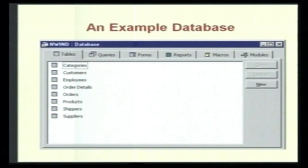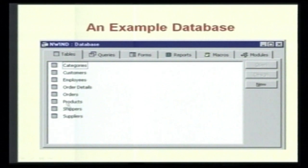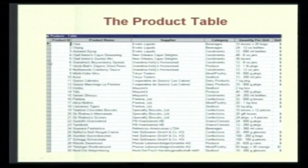Here is an example of a database with customers, employees, order details, orders, products, shippers, and suppliers — this is a typical manufacturing database. We are looking at one of these data tables called the product table, which has a product ID, product name, supplier, category, quantity per unit, and many more fields associated with it.